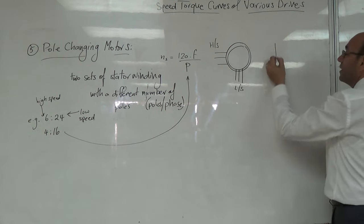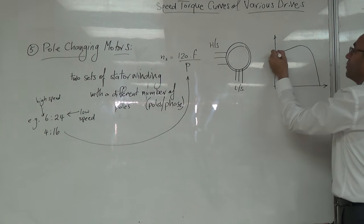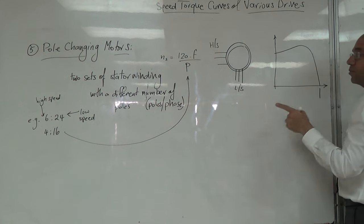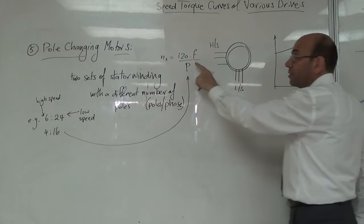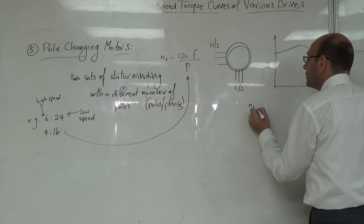وإذا رسمنا الآن speed-torque curve، فبكون عندي الـ synchronous speed تبعته، مثلاً لو كان عندي 50 hertz و4 poles، راح تصير عندي ns high speed.